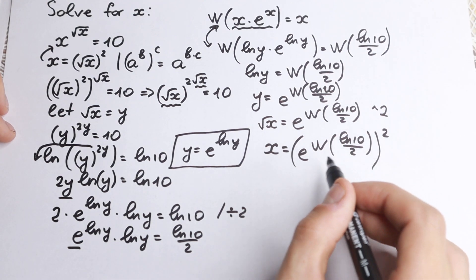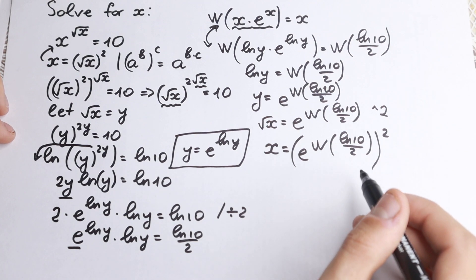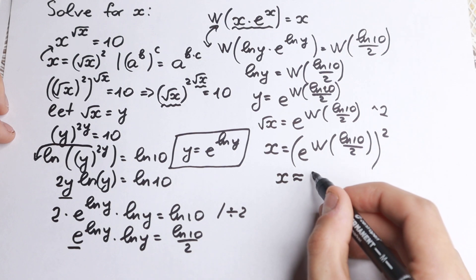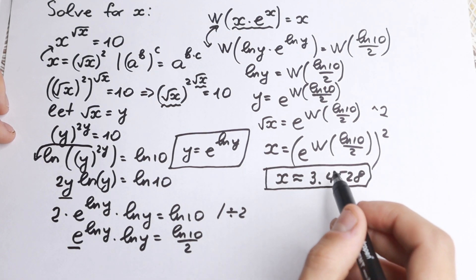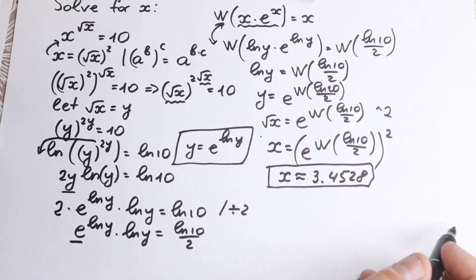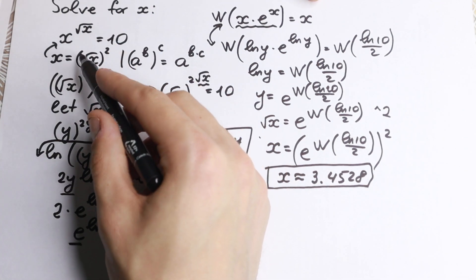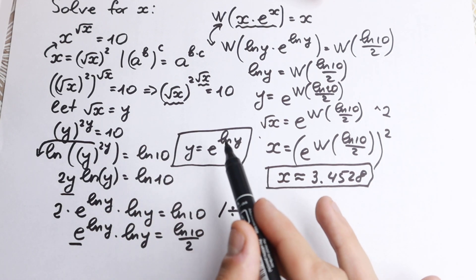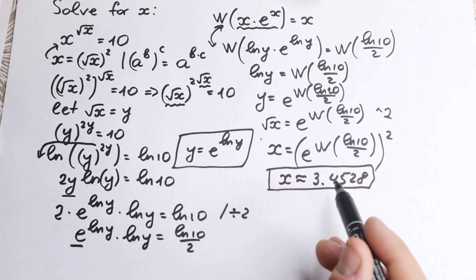You can find the Lambert W function value using internet resources or math libraries. Computing the exact value gives approximately x ≈ 3.4528. This is our answer. By inspection you might have guessed something between 2 and 4, since 2 cubed is 8 and 2 to the fourth is 16, so 10 fits in that range — and indeed 3.4528 lies right in that neighborhood.